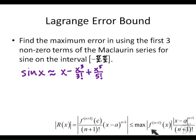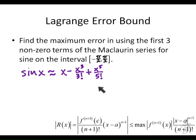Now let me ask: how many derivatives did we use to get this term? Remember the formula for the Taylor or Maclaurin series involves the nth derivative divided by n factorial times x to the nth power. Since we have x to the fifth over 5 factorial, that means we used the fifth derivative of sine to get that term. So when applying the Lagrange error bound we're going to use the n plus first derivative, which would be the sixth derivative.